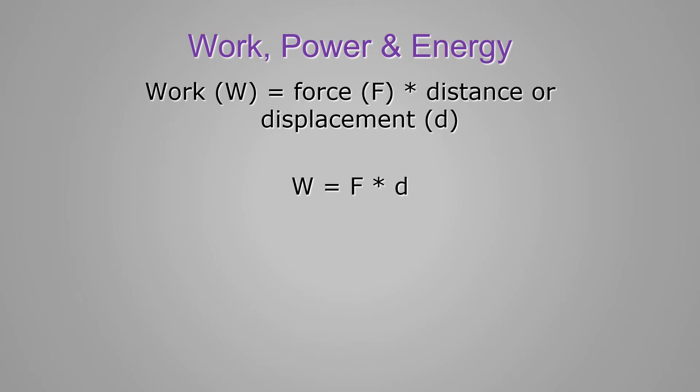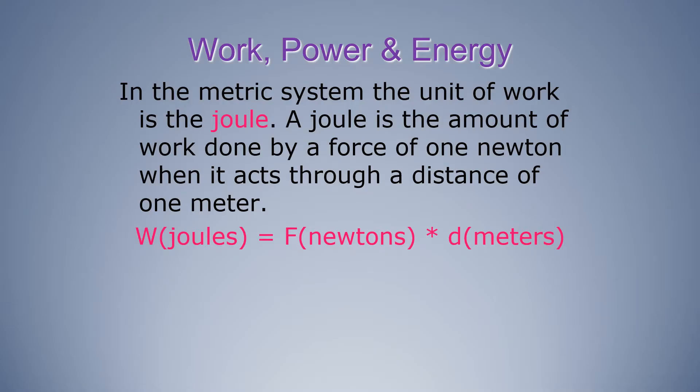To find the amount of work being done, multiply the force by the distance the object was displaced as a result of that force. In the metric system the unit of work is the joule. A joule is the amount of work done by a force of one Newton when it acts through a distance of one meter.